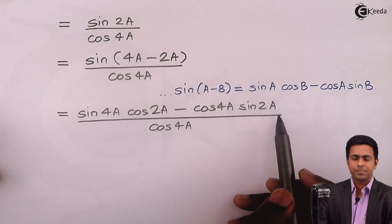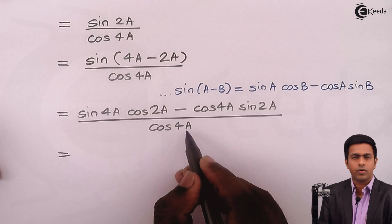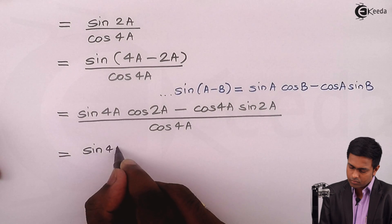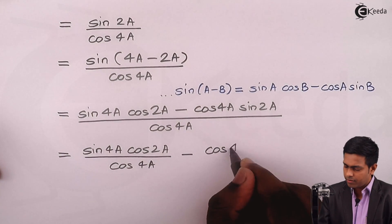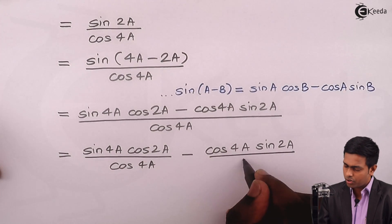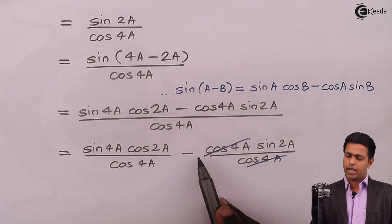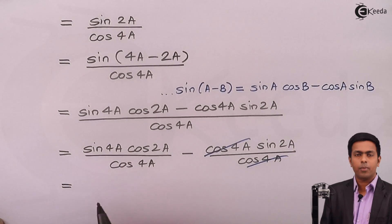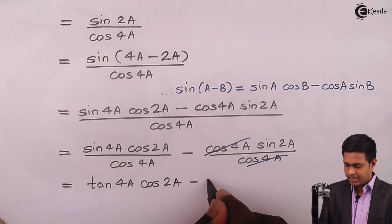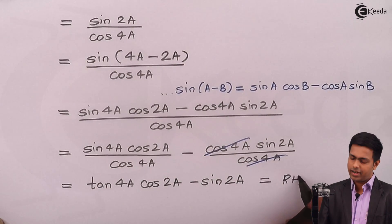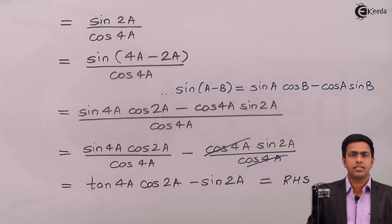Now we got two terms; we'll divide them separately by cos 4a. The first term gives sin 4a upon cos 4a which is tan 4a, multiplied by cos 2a. From the second term, cos 4a upon cos 4a cancels, giving minus sin 2a. So we get cos 2a into tan 4a minus sin 2a, and this is exactly our required right hand side. We proved the result using the formula of factorization and allied angles. Thank you.